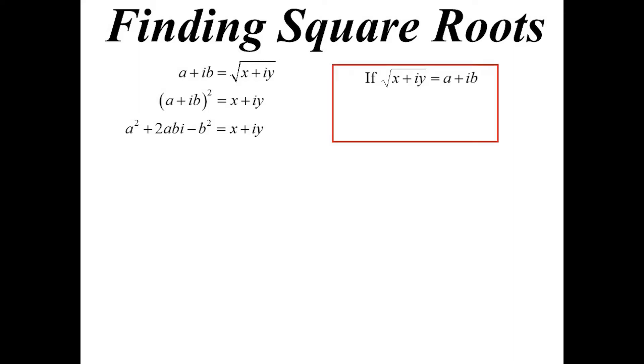Expand out the left-hand side. And then I can equate real and imaginary. So if the square root of X plus iY, and we're saying the answer is A plus iB, I know that A squared minus B squared will always equal the real part. And 2AB will always equal the imaginary part.